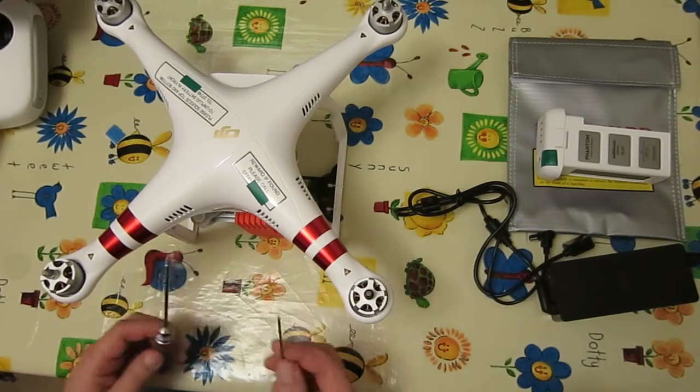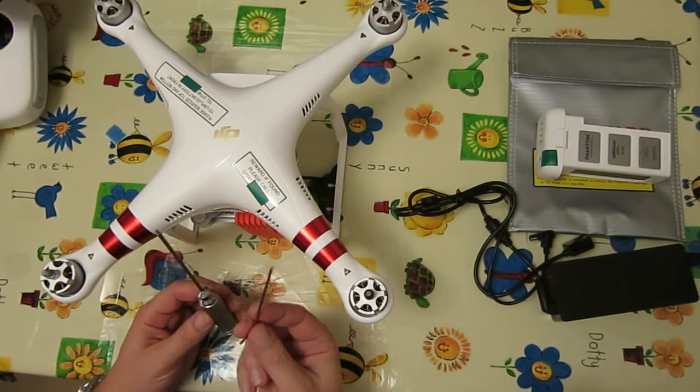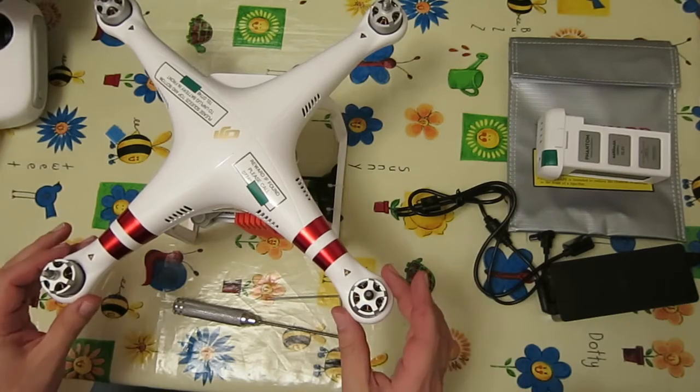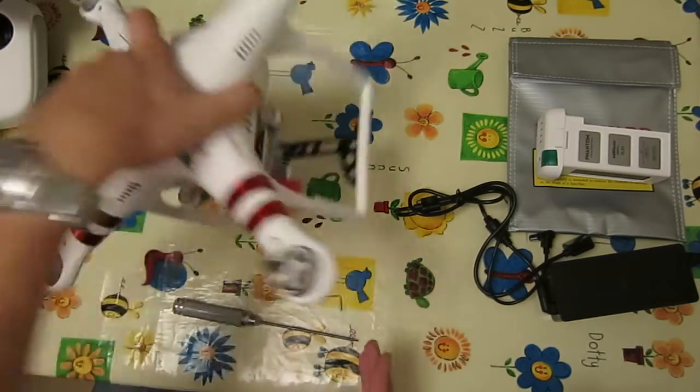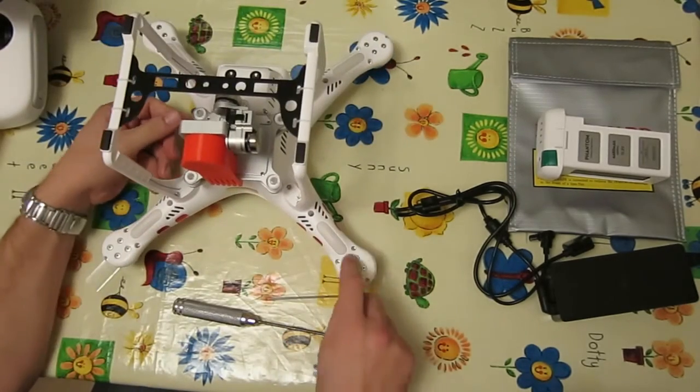The first thing is you don't really need to buy - you've probably already got a 2mm allen key. One of the issues with the Phantom 3 is the arms cracking, and where they're cracking is around these motor bolt holes.